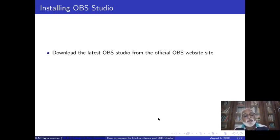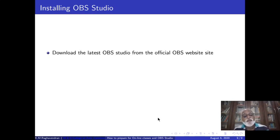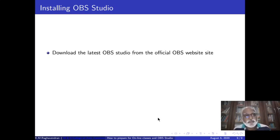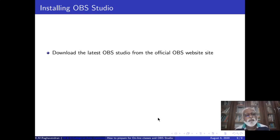How do we install OBS? It is very simple. We have to download the latest OBS Studio from the official OBS website and install it. It is available for Windows, for Linux, and for Mac operating system also. The best part is it is a very small file size and it is an executable file — you just have to download it, install it, and then you are ready.